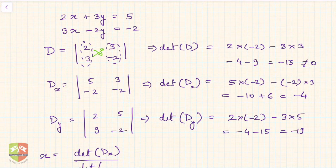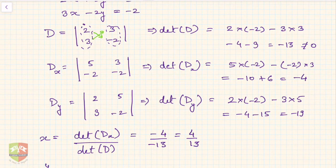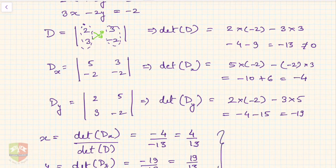So x equals Dx divided by D, which is −4 divided by −13, giving x = 4/13. And y equals Dy divided by D, which is −19 divided by −13, giving y = 19/13. This is our solution: x = 4/13 and y = 19/13.